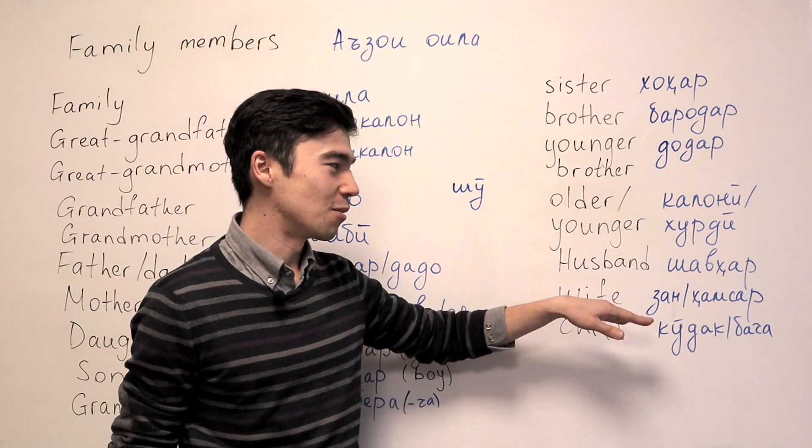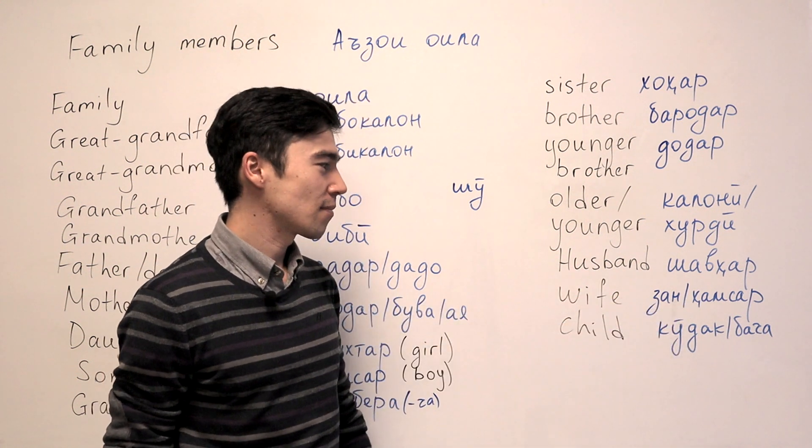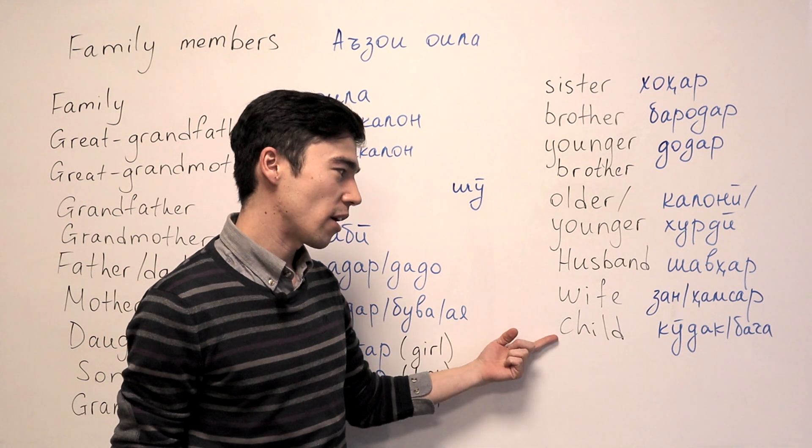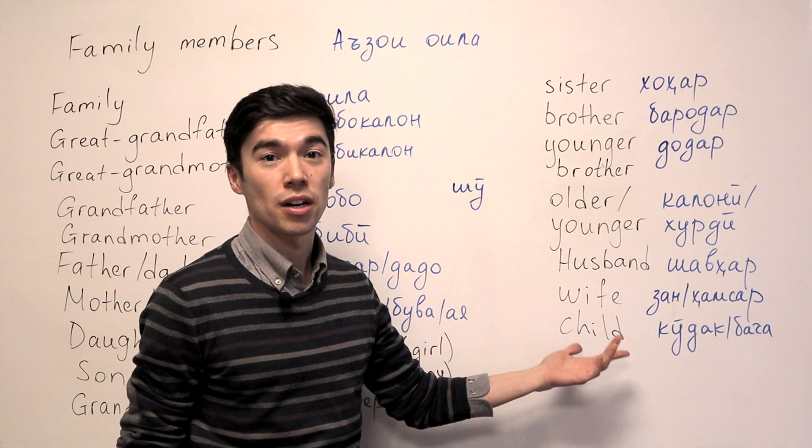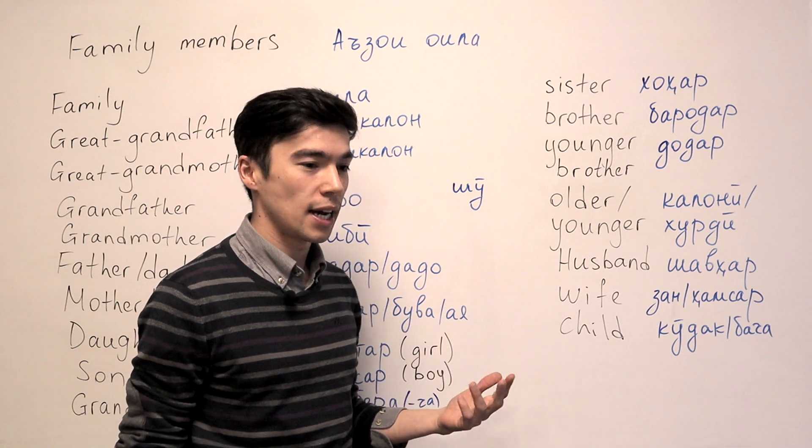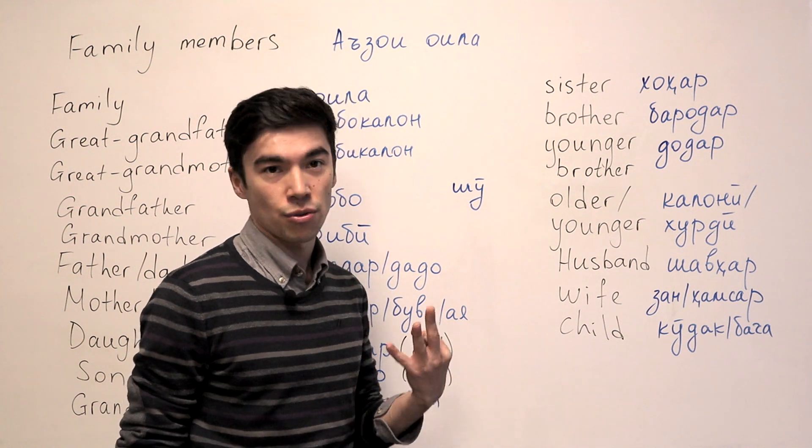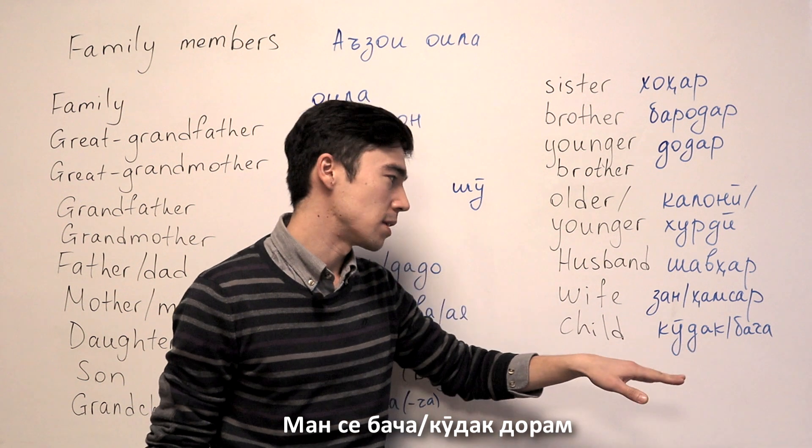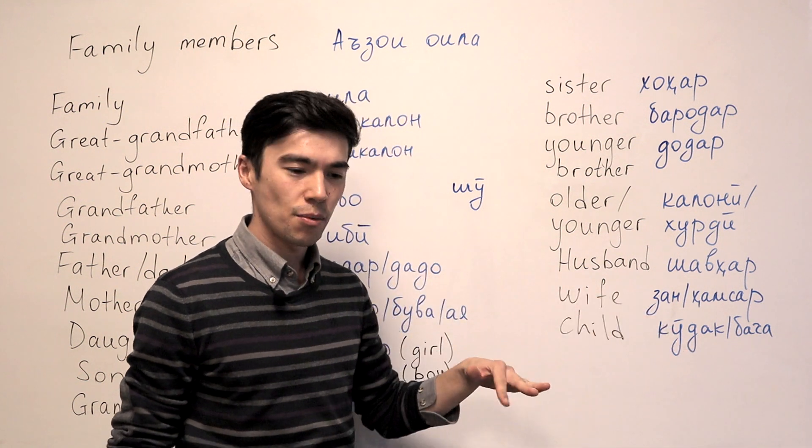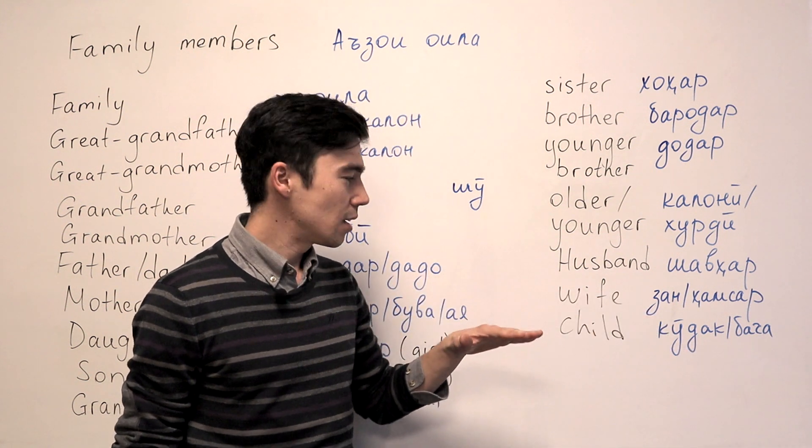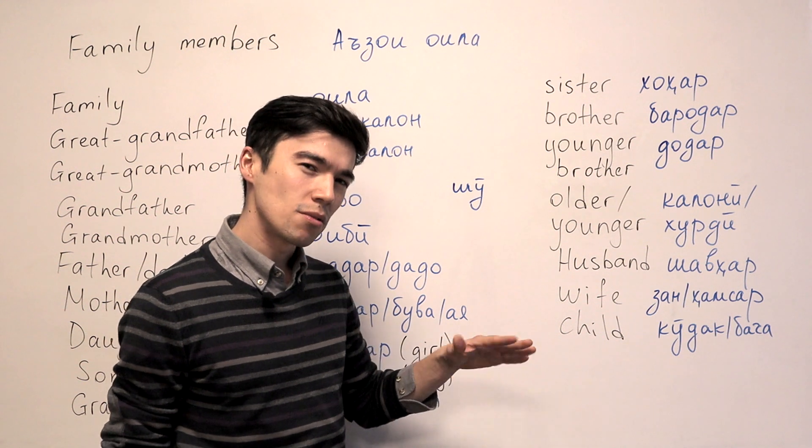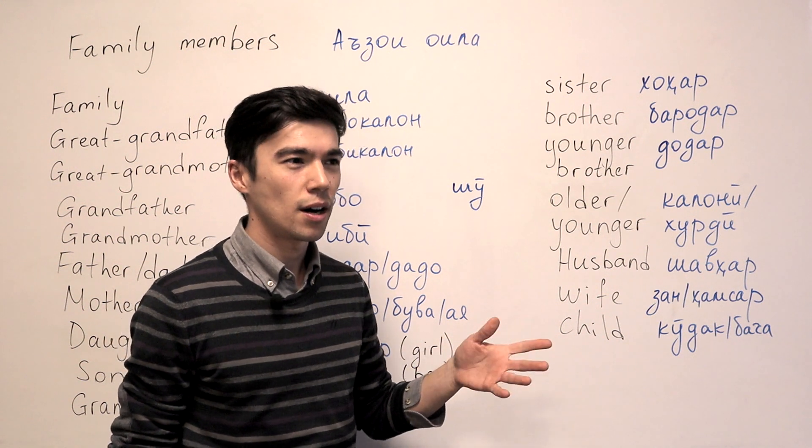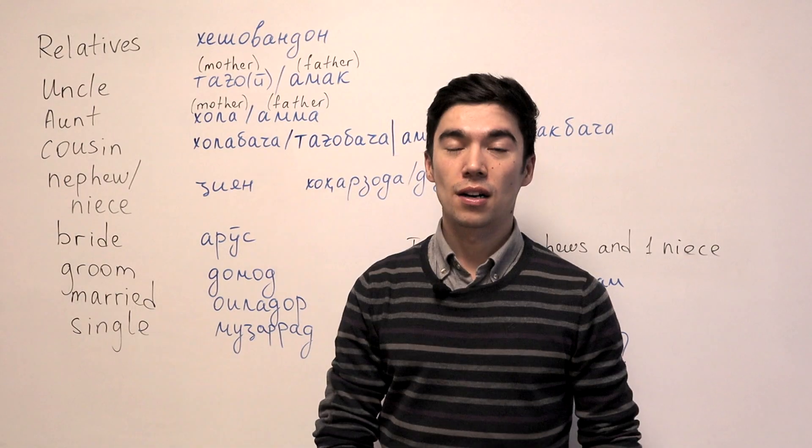And wife will be Zan or Hamsar. And child will be Kodak or Batche. For example, you want to say I have three children. Kodak is for someone younger, right? Usually, someone who is like maybe three, five, seven years old.